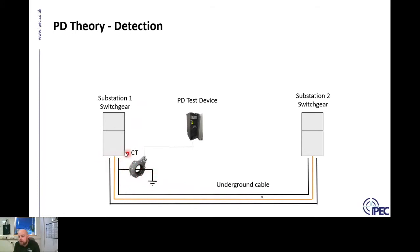The signal travels along the inside of the earth sheath, gets to the switchgear termination, where the earth is isolated from the switchgear, and travels through the HFCT. This is key: in order to detect a PD along the earth, we need that earth to be isolated from the switchgear. If the earth is connected to the switchgear, the PD signal will go into the switchgear and be lost — we won't be able to detect it through the HFCT.